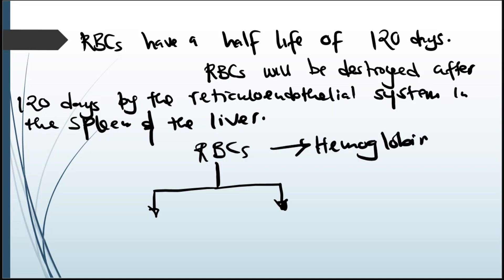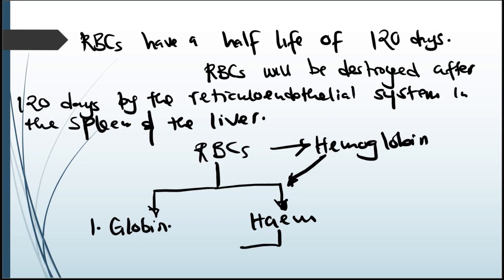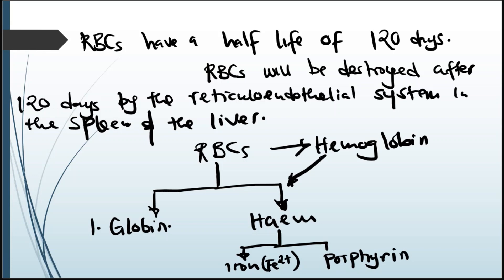Hemoglobin is made up of two things: number one, the globin chains, and number two, heme. Heme is made up of two things as well: iron (Fe²⁺) and porphyrin. Now, what is the fate of these components of hemoglobin?